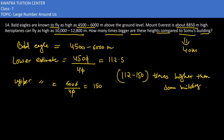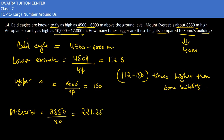Now for Mount Everest. The height of Mount Everest is approximately 8,850 meters. We divide 8,850 by 40 to find how many times higher it is than the Somos building.